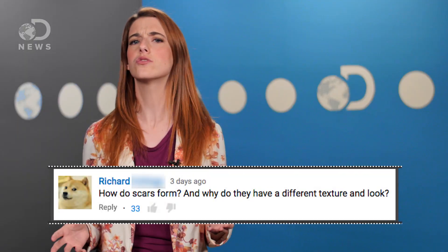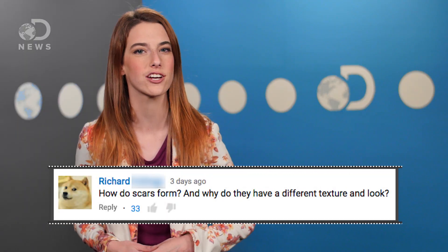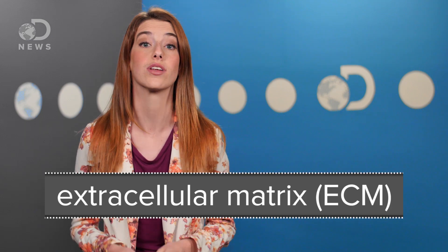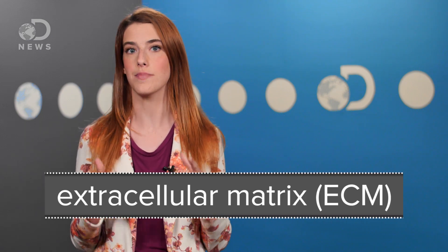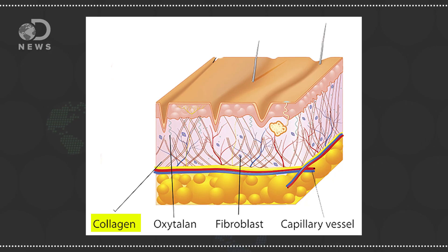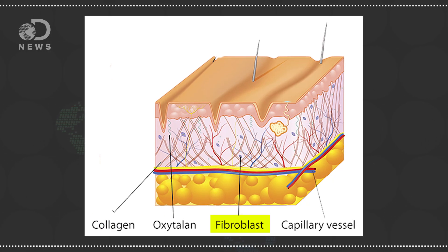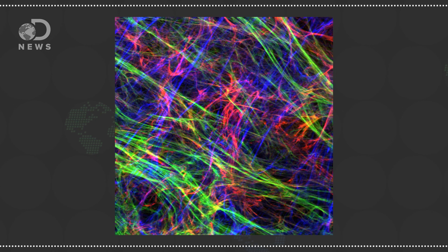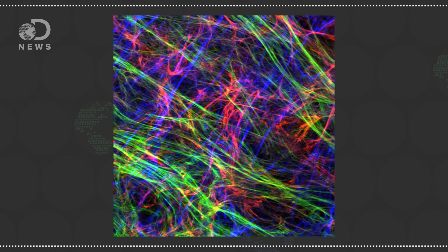Last week we got a great question from Richard asking how do scars form and why do they have a different texture and look? Well Richard, you've got some great questions and we've got some answers. So in your skin and other tissues, your cells are connected by what's called an extracellular matrix. This ECM helps cells exchange nutrients and share information. It's mostly made up of collagen, a strong fibrous material secreted by cells called fibroblasts. Usually the ECM is in a random basket weave type formation.